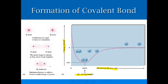When the molecules are too close, the repulsive forces are greater than the attractive. When they're far apart, the attractive forces are greater than the repulsive. What we want them to do is get to a nice happy medium — this is the bond length, where they have the lowest potential energy and where attraction and repulsion balance out.